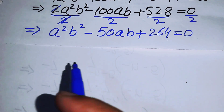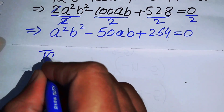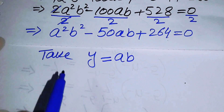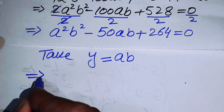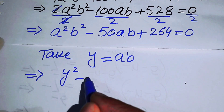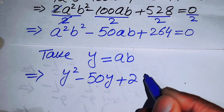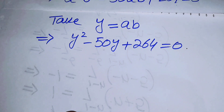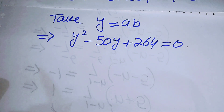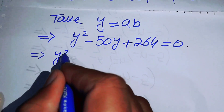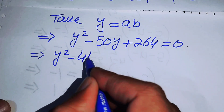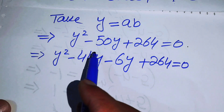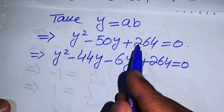We make the substitution y = ab, which converts the equation into the standard quadratic form: y² minus 50y plus 264 equals 0. We now solve this quadratic by factoring.